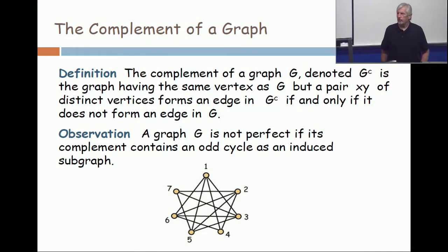All right, let's talk about what's meant by the complement of a graph. The complement of a graph, denoted G sub c, is the graph having the same vertex set as G. But now a pair xy of distinct vertices forms an edge in the complement if and only if it's not an edge in the graph.